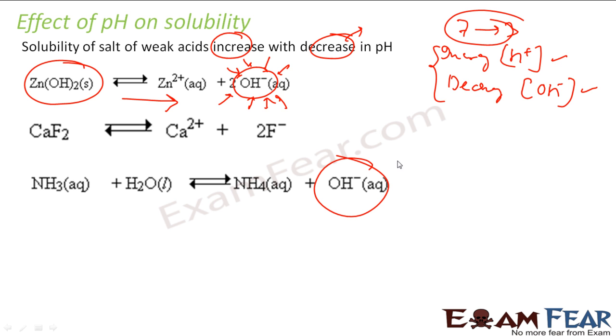Same thing here also. If I am decreasing the OH- ion concentration here, the stress will be dissolved if the equilibrium moves in this direction. If I am increasing the H+ ion concentration, H+ will react with F- to form HF. If I am reducing this, the equilibrium will move in this direction to make sure that the stress is released and thus it will be dissolved.